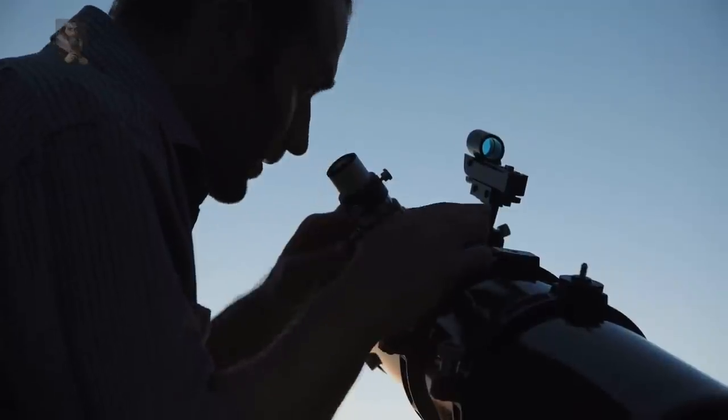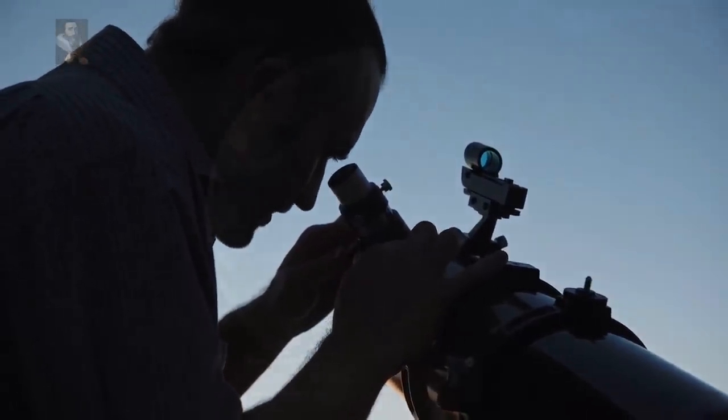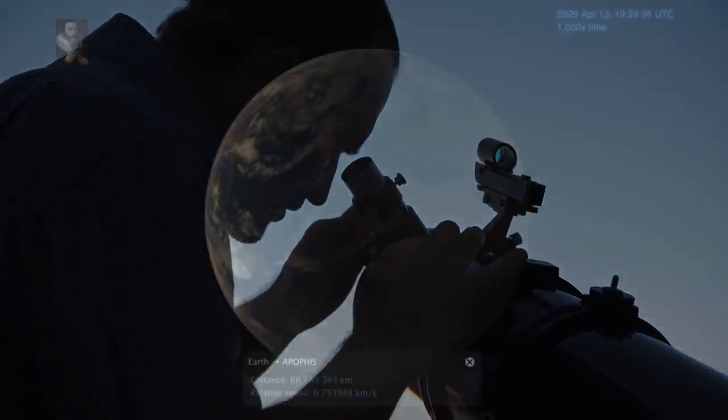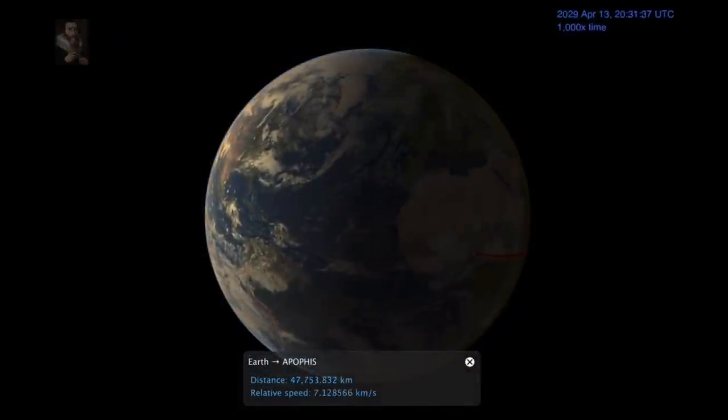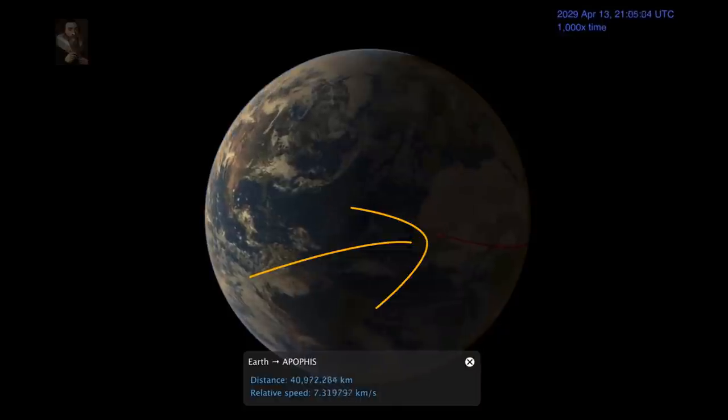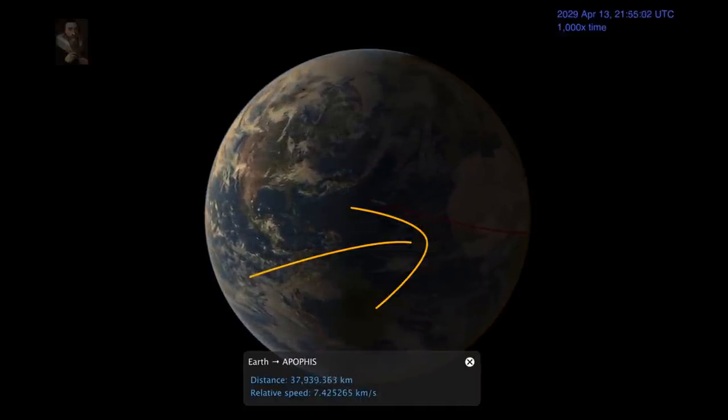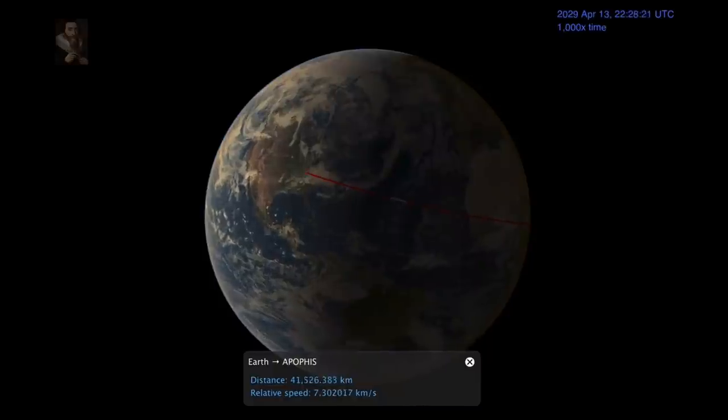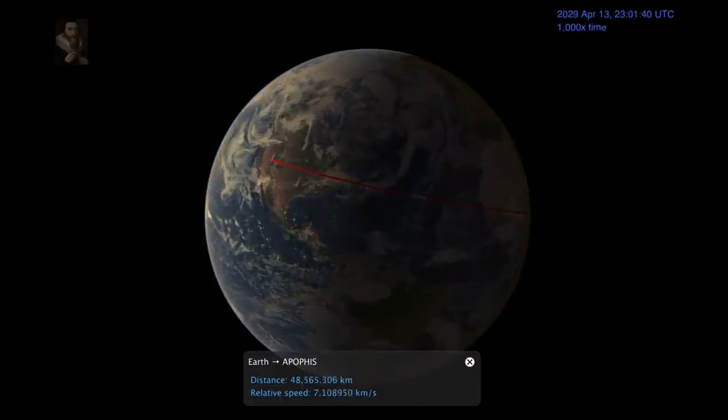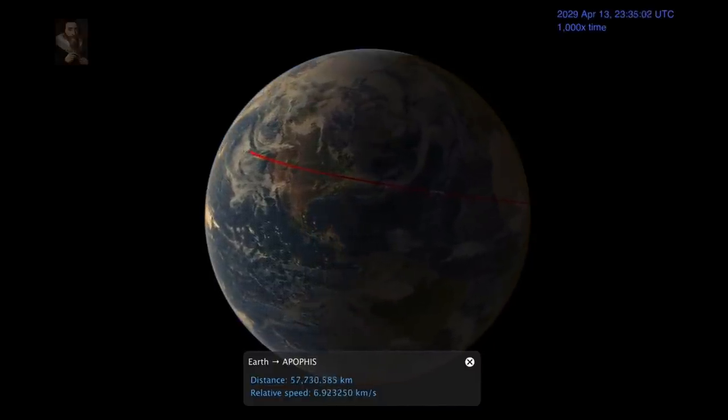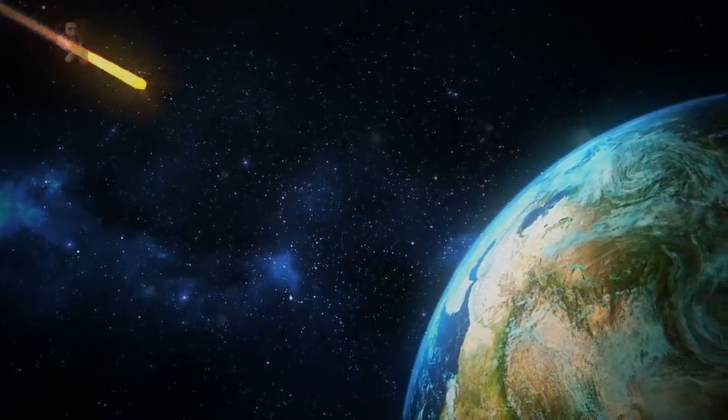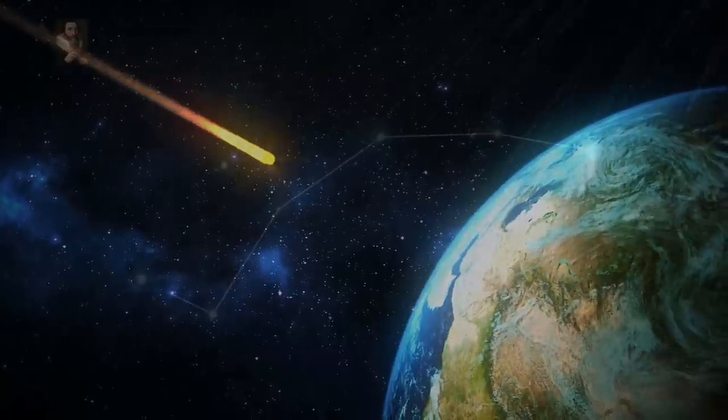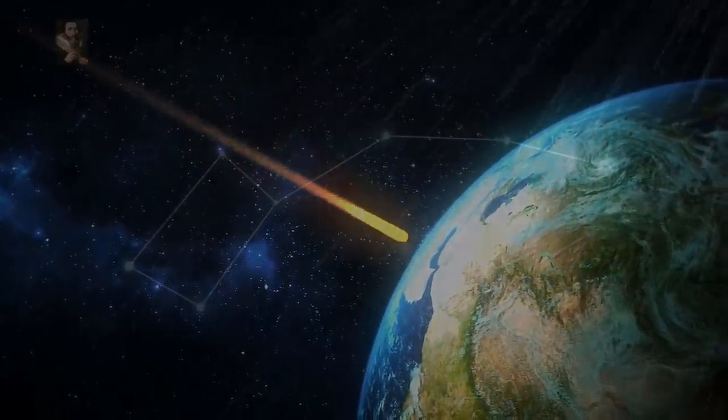Designated 99942 Apophis, we will know all about this thing as the time gets closer because astronomers the world over will see it coming years in advance. On Friday the 13th of April in the year 2029, the huge asteroid will streak across the sky, getting brighter and faster as it approaches our planet. It will travel more than the width of the full moon and will get as bright as the stars in the little dipper.